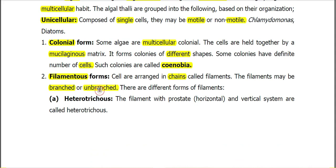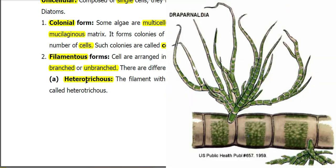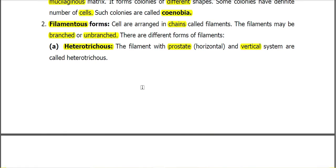The condition in which filaments are branched in such a way that some filaments are present horizontally and some are present vertically is called the heterotrichous condition. In this condition, the horizontal system is called the prostrate system, while the vertical system is called the erect system. The condition in which both the prostrate and vertical systems are present is called heterotrichous.